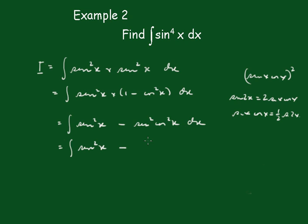So, we squared both sides; it becomes 1 quarter sin squared 2x dx.